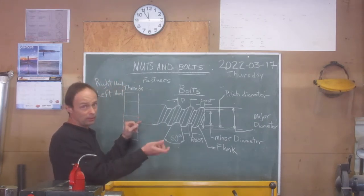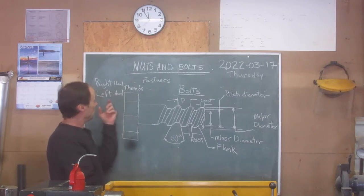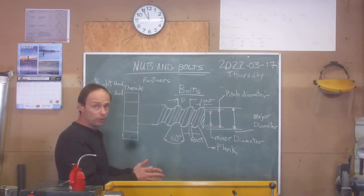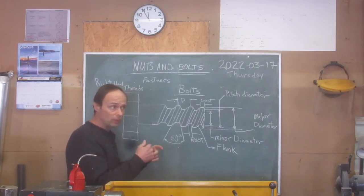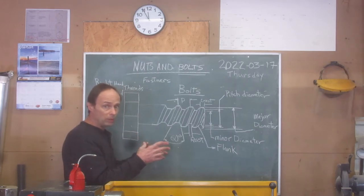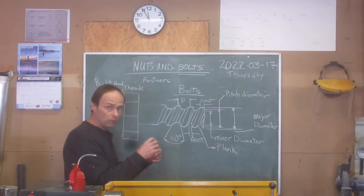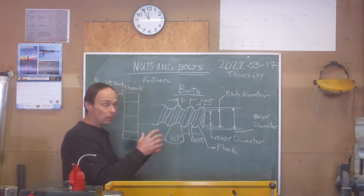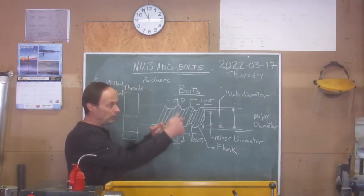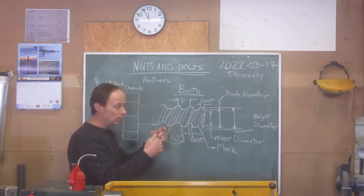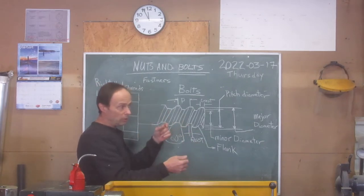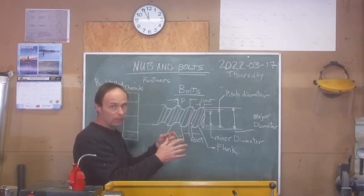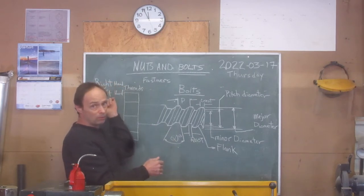Threads on bolts come in right-hand or left-hand — righty tighty, lefty loosey. Left-hand threads are used in situations where directional spin is a factor, like on an armature or spindle. For example, on a saw blade: if the blade has momentum and when you stop the tool the blade wants to spin the bolt loose, you need the opposite thread. That's where left-hand threads are used.